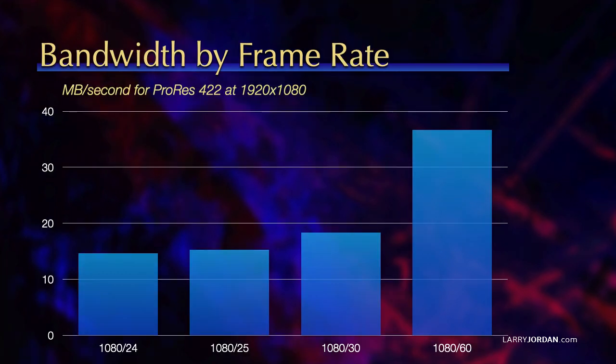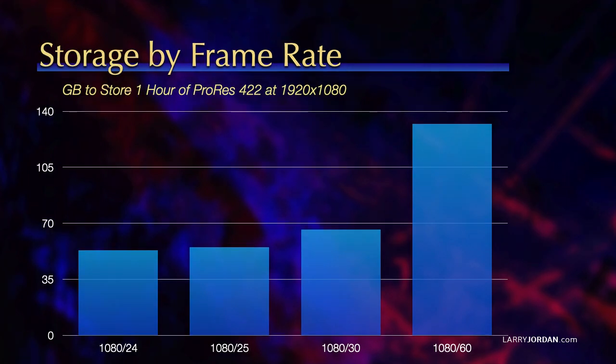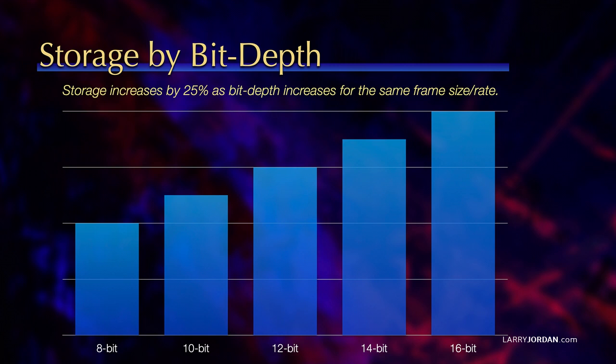As frame rate increases, look what happens to the megabytes per second — from roughly 15 for 24 or 25 frames per second to close to 35 megabytes per second, simply for the difference in frame rate. Similarly, for gigabytes to store an hour of ProRes 4:2:2 at a 1080 frame size, as frame rates increase, file sizes increase. And as bit depth increases — 8-bit, 10-bit, 12, 14, 16-bit — look at how file sizes double as the bit depth increases. This is not to say don't use larger frame sizes or faster frame rates or more bit depth, but switching from one to the other is not as trivial as you may think, and your storage may not be able to keep up.